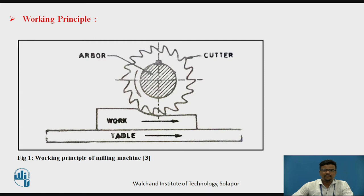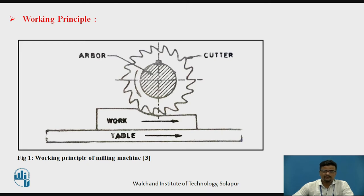First of all we will discuss what is meant by a milling machine. In front of you there is a schematic diagram of the milling machine. You can see it consists of a work table on which the work piece can be mounted. In case of a lathe machine, cylindrical work pieces are mounted using job holding devices like a chuck, mandrel, or face plate. But in the case of a milling machine, irregular types of work pieces can be mounted — that is the advantage of the milling machine.